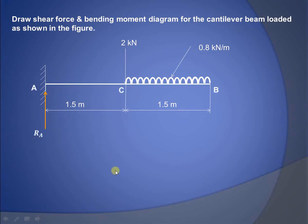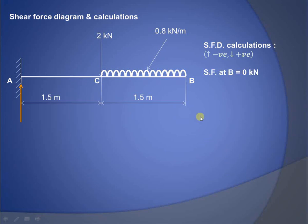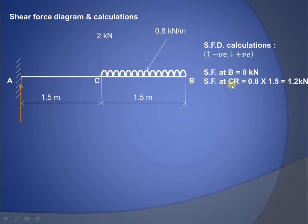First we will draw the shear force diagram. The calculations use the convention that upward forces are considered negative and downward forces are considered positive. Since there is no force acting at point B, the shear force at point B is 0. Shear force at C-right means just to the right of C, without considering the effect of the point load.